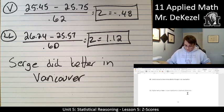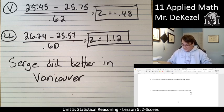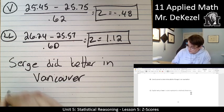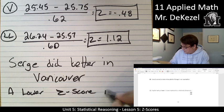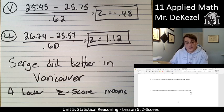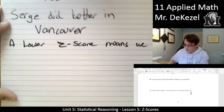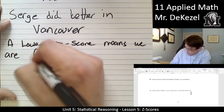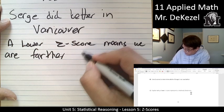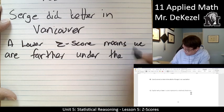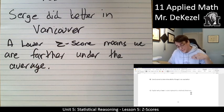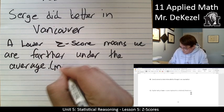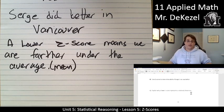To explain why a lower z-score represents a faster run: a lower z-score means we are farther under the mean — farther under the average time — which means running faster.